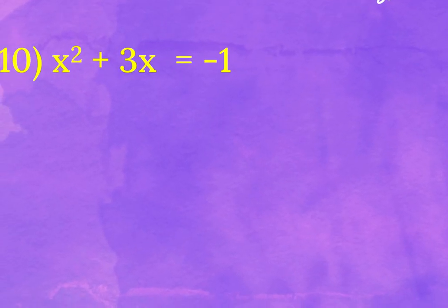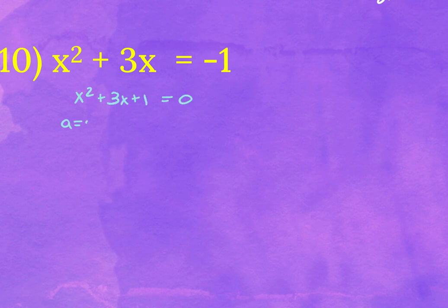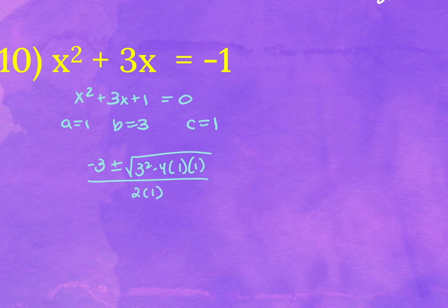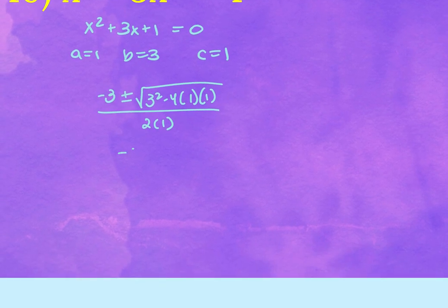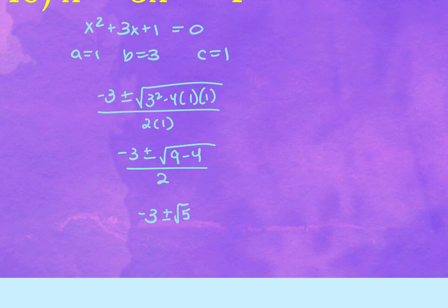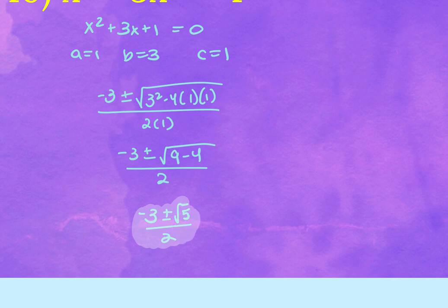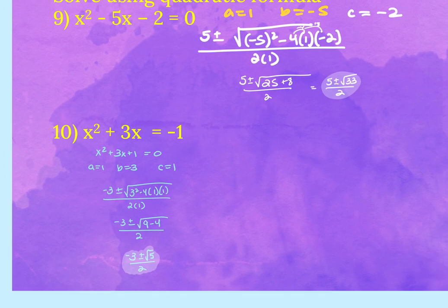For problem ten, add the 1 to get x squared plus 3x plus 1 equals zero. Then a is 1, b is 3, c is 1. Plugging into the quadratic formula: negative 3 plus and minus the square root of 9 minus 4, all over 2 — which gives negative 3 plus and minus the square root of 5 over 2. If it's a square root that can be simplified, you simplify it; if not, keep it in that format.